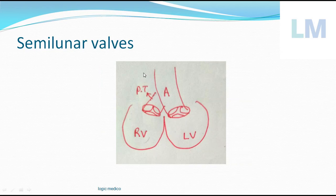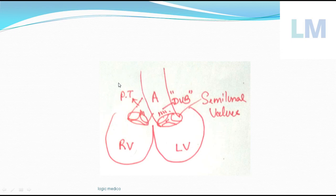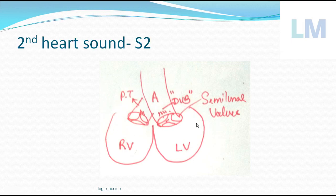When these valves close, you hear the sound better in the upper end of the sternum, near the second intercostal space. For the aortic valve, it is heard in the right parasternal second intercostal space. You might expect the pulmonary 'dub' sound to be heard on the right side, but the arteries crisscross one another like a figure of X. So the aortic valve closure is heard better on the right side, while pulmonary valve closure is heard better on the left parasternal second intercostal space. The closure of these semilunar valves produces the second heart sound, also called S2.